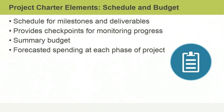The summary budget element of the project charter is an itemized forecast of estimated or intended expenditures assigned to a particular project activity over a set period. Your summary budget specifies an allocated disbursement amount for each phase of the project.